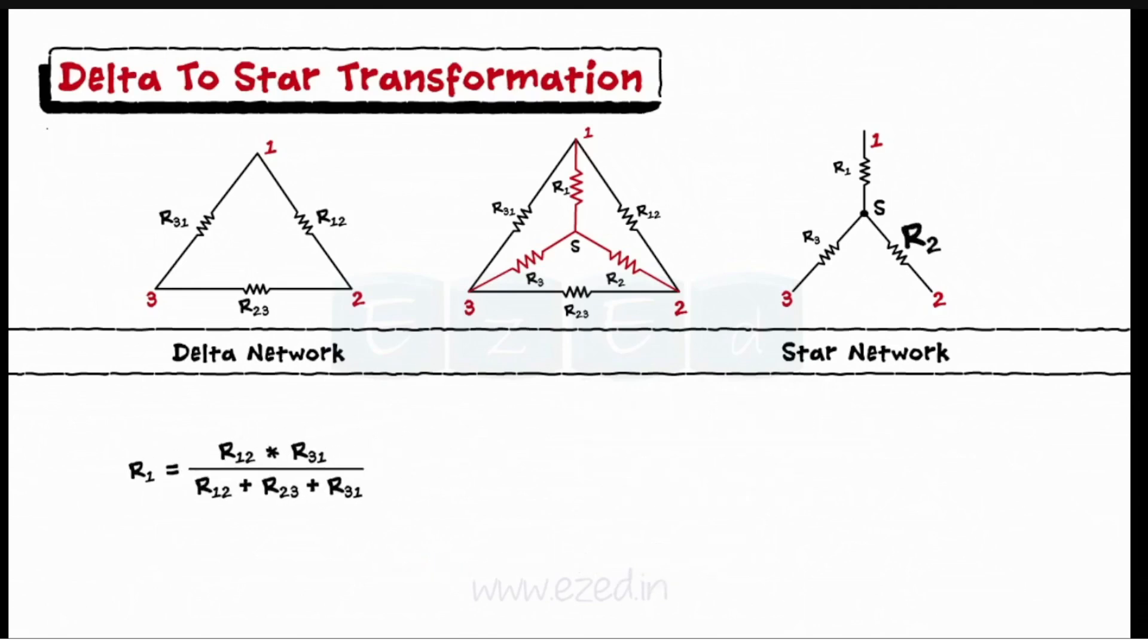Thus, we can write the formula for R2 as R2 equals R23 into R12 upon R12 plus R23 plus R31.